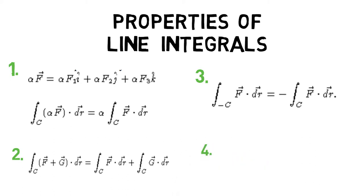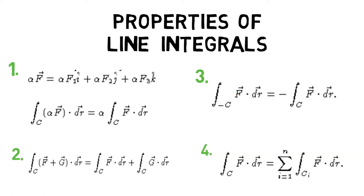Fourth and last, if the curve c is not a smooth curve but is a piecewise smooth curve, it can be thought of as a sum of finitely many smooth curves. The line integral around the total path is the sum of line integrals around each of the smaller curves.